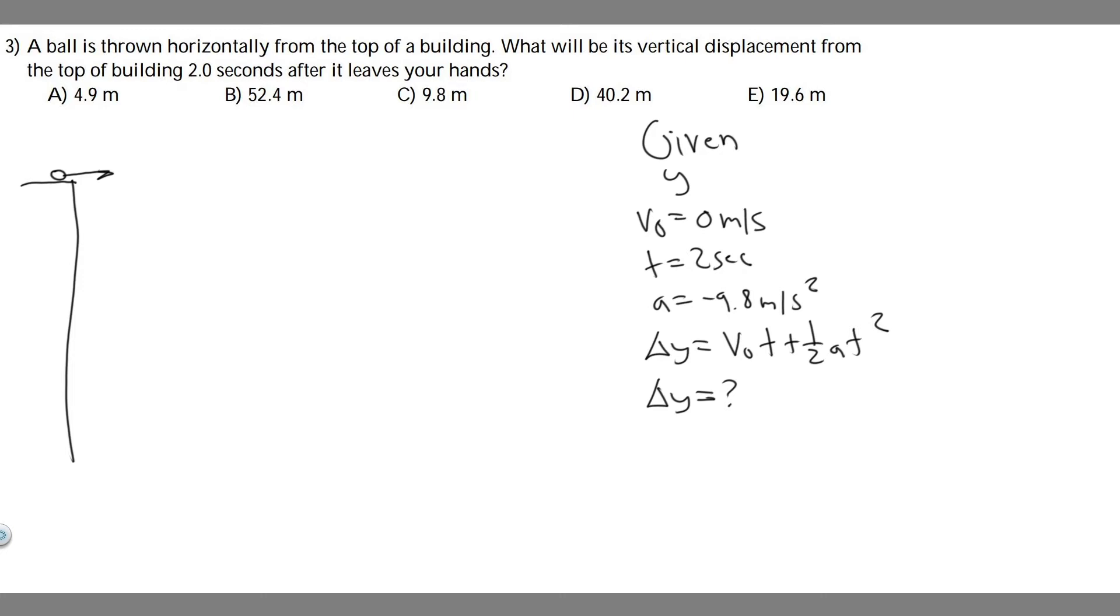So let's just start off with what we're given. We know always in a problem where we have something falling, the acceleration in the y direction is going to be 9.8 meters per second squared, and so it's negative because it's going down.